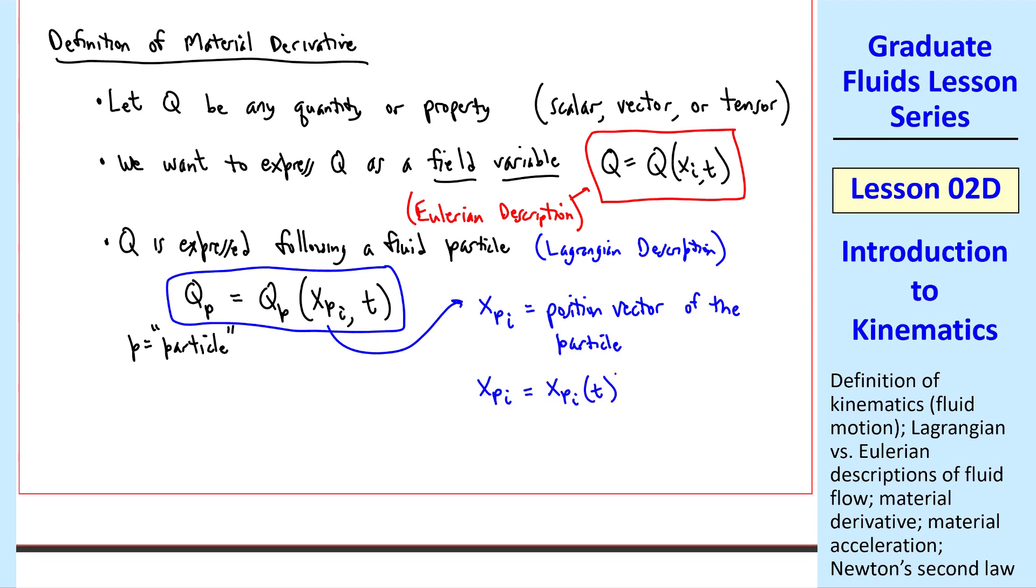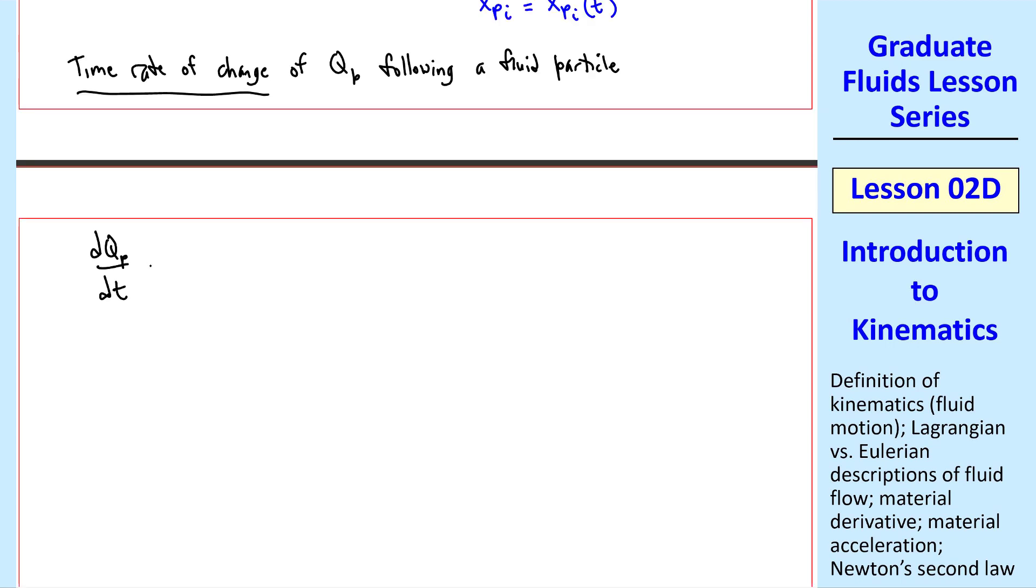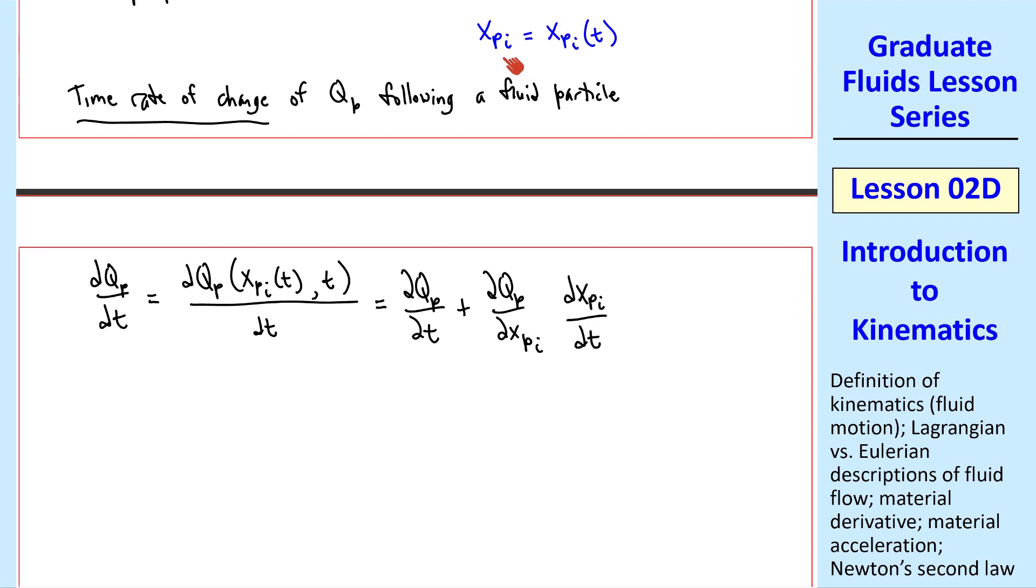xpi is a function of time. In other words, suppose that you have a record of where a certain particle is as a function of time. We express that as coordinate vector xp. Now consider the time rate of change of qp following a fluid particle. We write d of qp dt equal dqp, which is a function of xpi of t and t dt. We use the chain rule. Since qp is a function of more than one variable, it's partial derivative del qp del t plus del qp del xpi dxpi dt. Note that since xpi is a function only of time, we use a total derivative here. But we use partials here, since qp is a function of more than one variable. Let's call this equation 1.